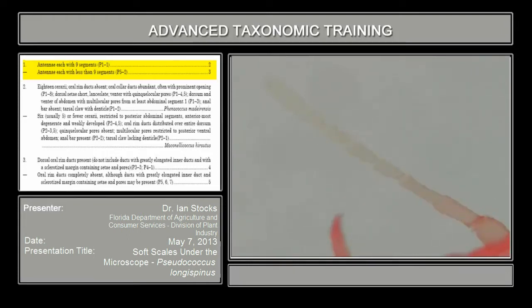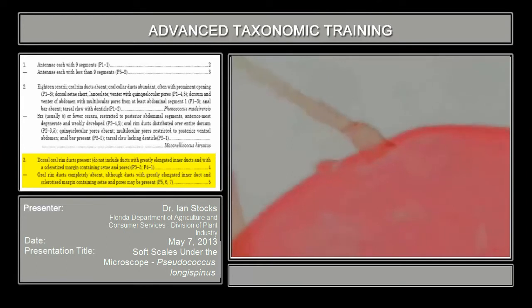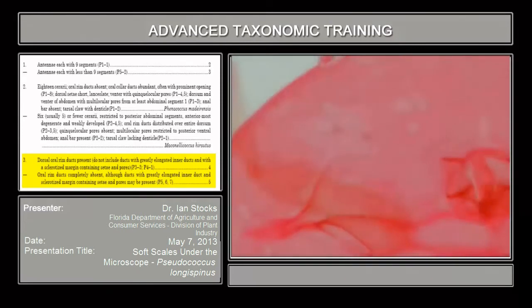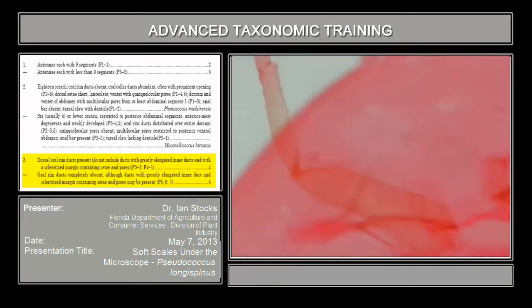All right, so that's going to drop us down now to couplet number three. Okay, but before we go through the steps in the couplet, we're going to do a little tour of the morphology here to get our bearings again. Okay, so as I move from the anterior to the posterior region of the mealybug, we can pick up the eye, the mouth parts there in the middle.